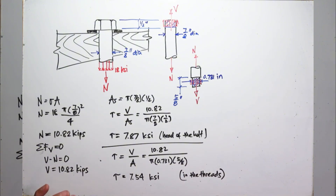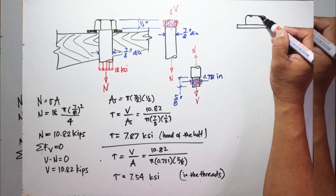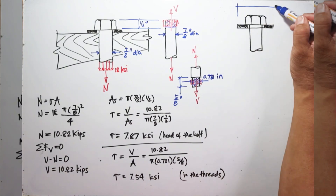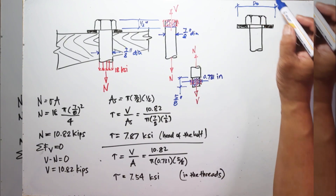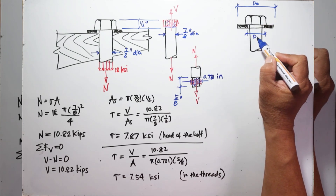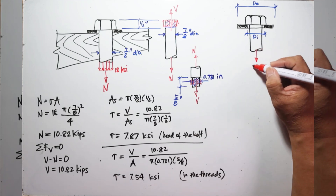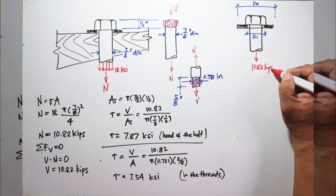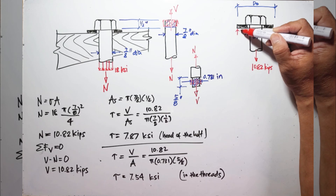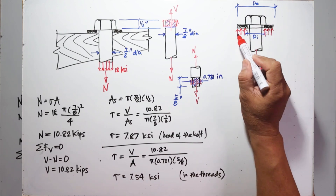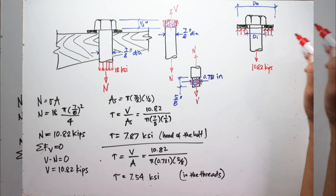We are also asked for the outer diameter of the washers if the bearing stress is limited to 800 PSI, and we are given the inside diameter. Let the outside diameter be dO and the inside diameter dI, which is given to be 9/8 inch. We still have the tensile force of 10.82 kips, so there will be bearing stress uniformly distributed over the bearing area.